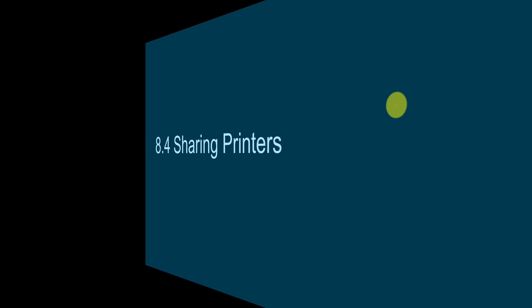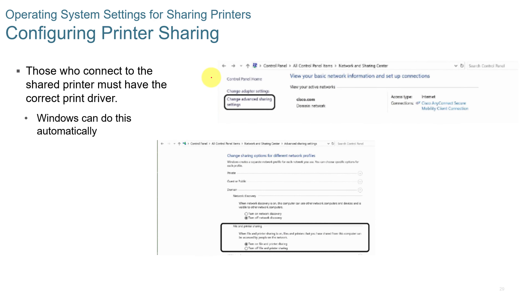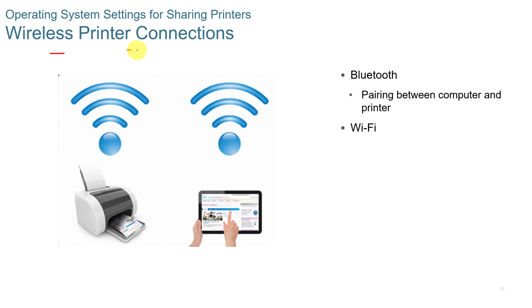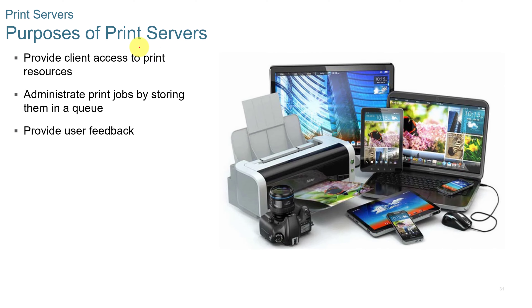Sharing printers. When you configure print sharing, those who connect to the shared printer must have the correct print driver. Windows can do this automatically — when they connect, it should find the right print driver and install it for them. You can also have wireless print options, using Bluetooth or Wi-Fi to pair between computers and printers. You can have print servers that provide client access to print resources, administer print jobs by storing them in a queue, and provide user feedback.